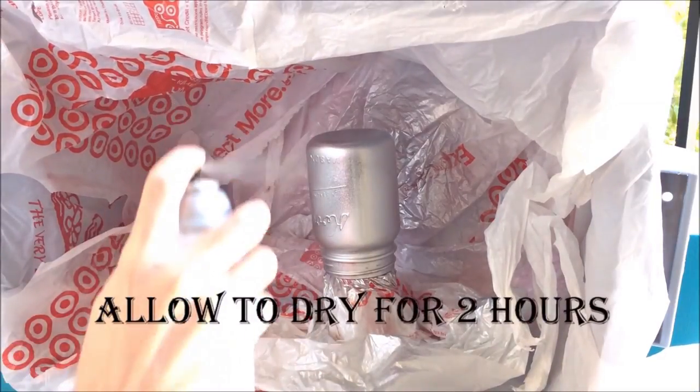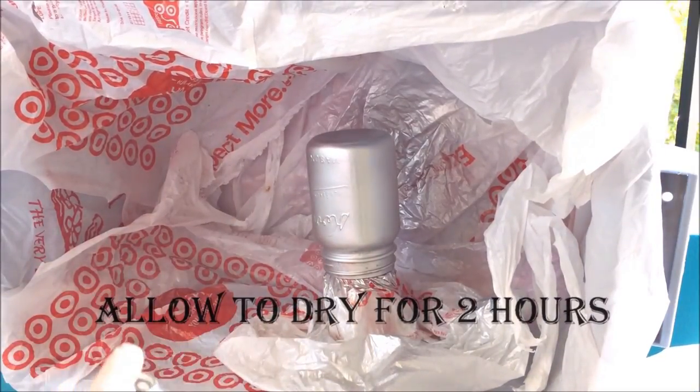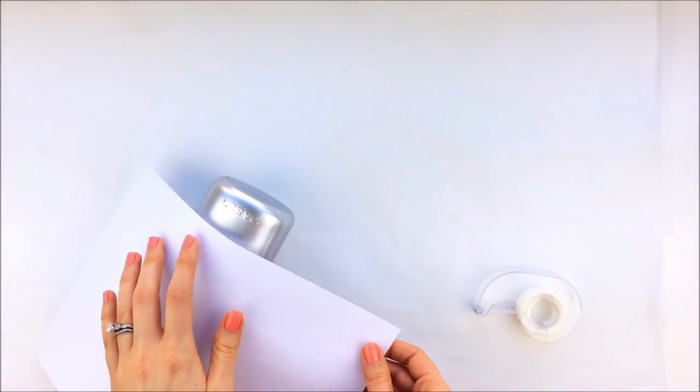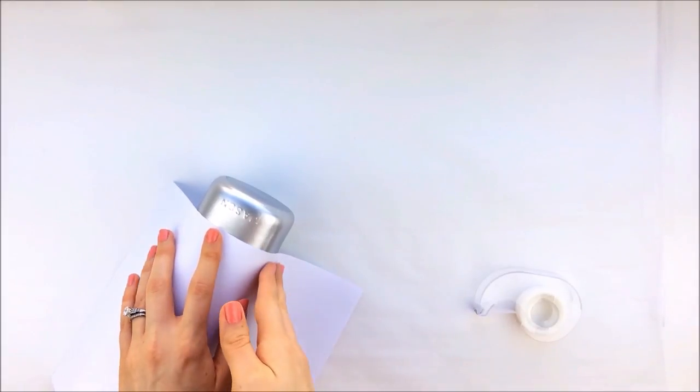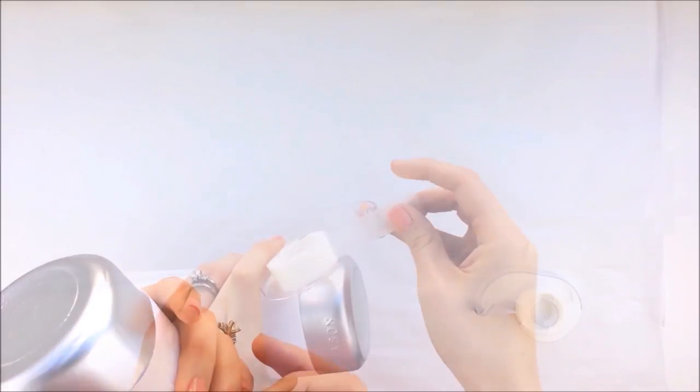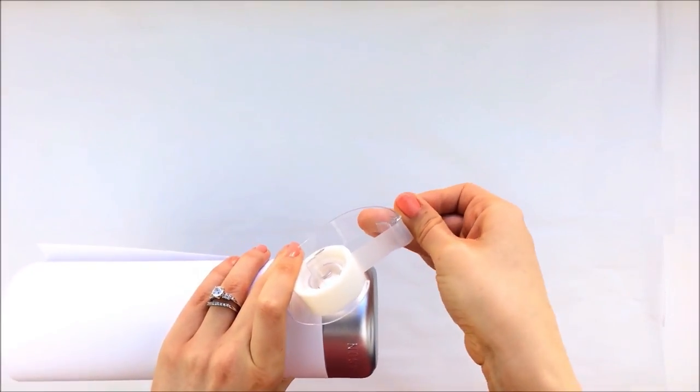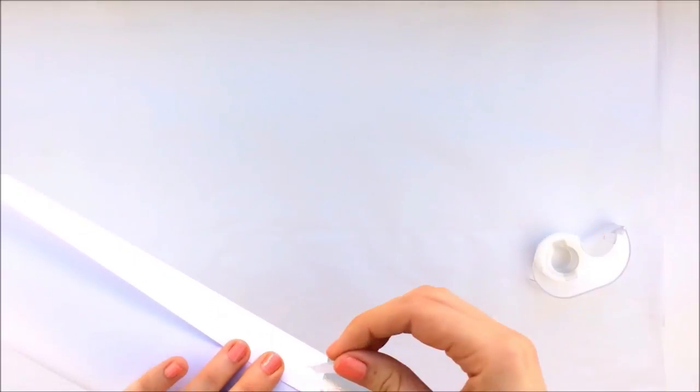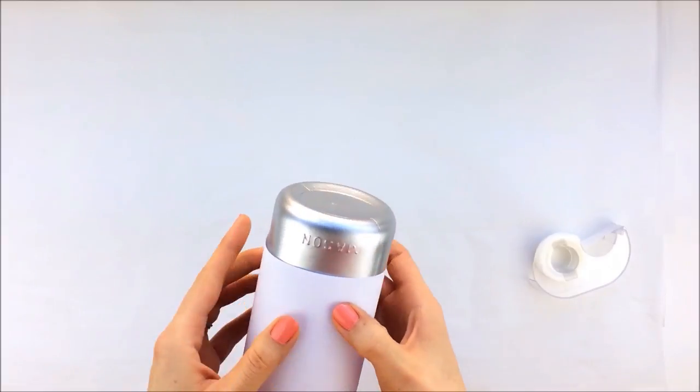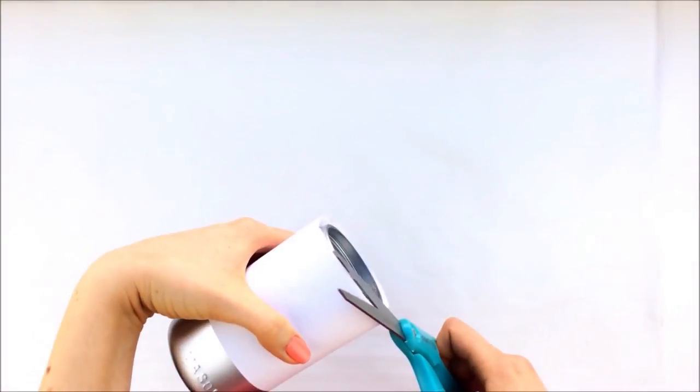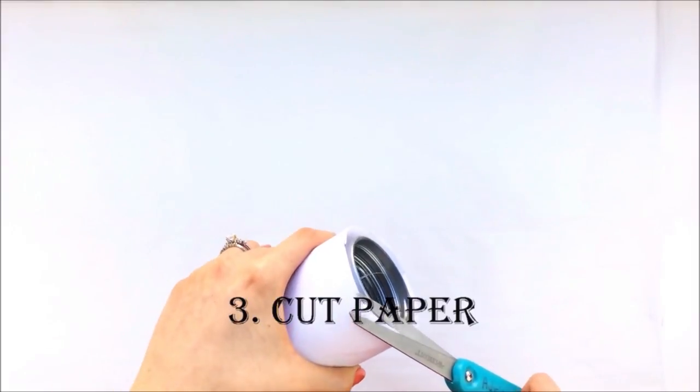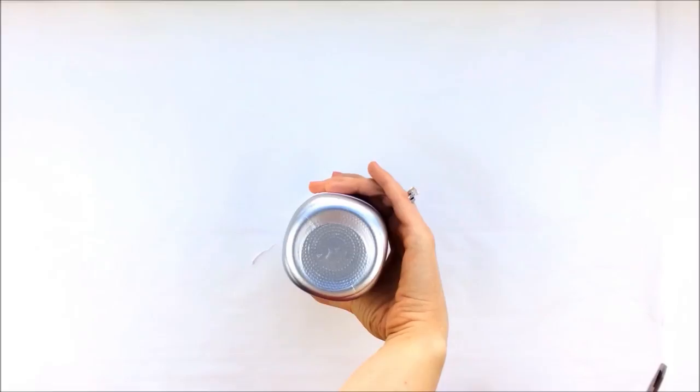Then I'm going to take the piece of paper and wrap it around the mason jar to form a straight line. Then cut off the upper portion of the paper so that you can turn your mason jar upside down.